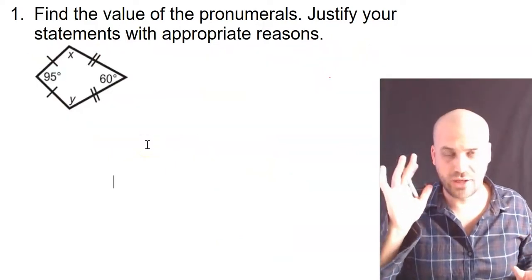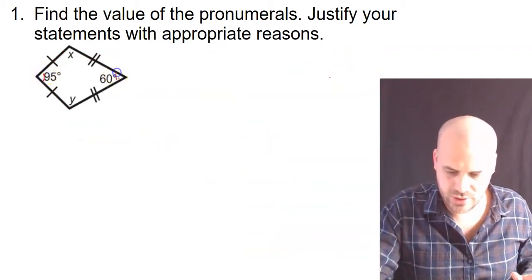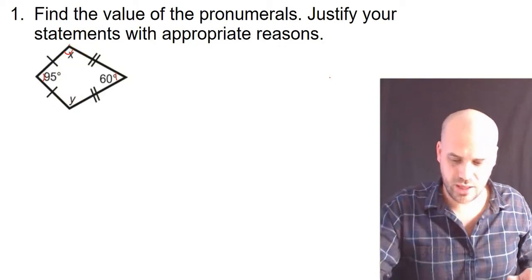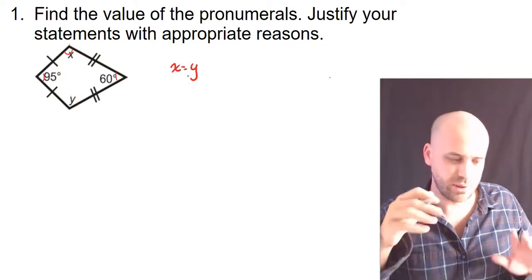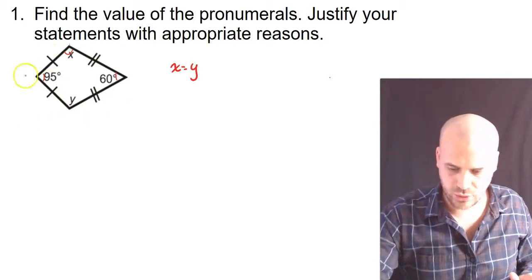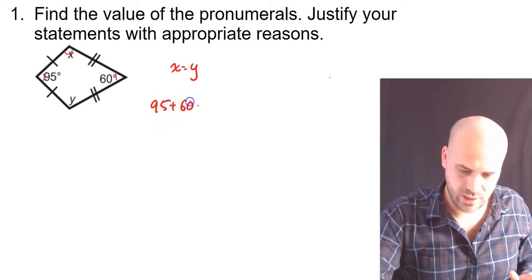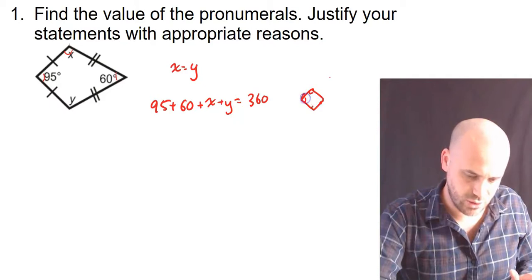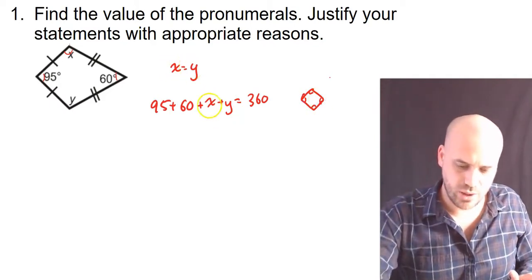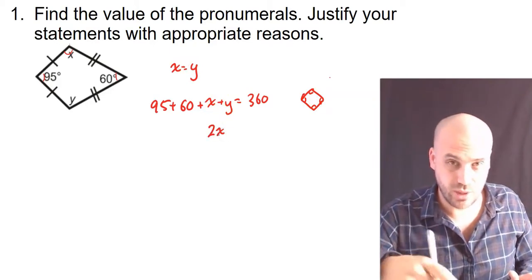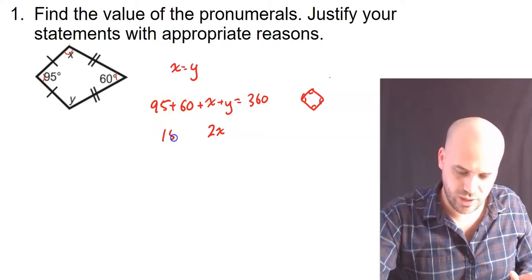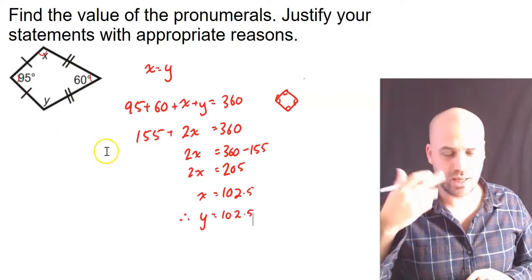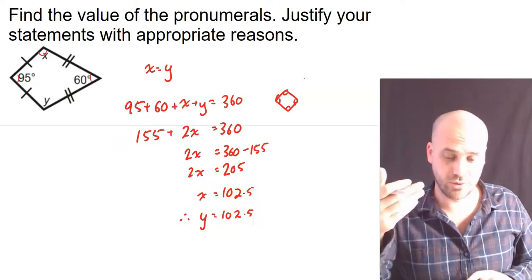Similar idea here. This time we have a kite. Now, here we have 95 degrees. Here we have 60 degrees. And in a kite, these opposite angles, the ones that join the two sides of different lengths, they're going to be equal. So, that means that x equals y. So, we can play the similar idea that I used in the previous example. This is a quadrilateral, which means that 95 plus 60 plus x plus y will equal 360 degrees because of the internal angles of a quadrilateral. We already know that x equals y. So, x plus y is 2x, because y is x. 95 plus 60 is 155, equals 360. And then we're just solving that. Same working as before, so I won't do it on camera, but we get x equals 102.5 and therefore y equals 102.5 because they're the same.